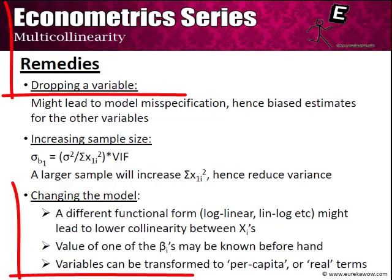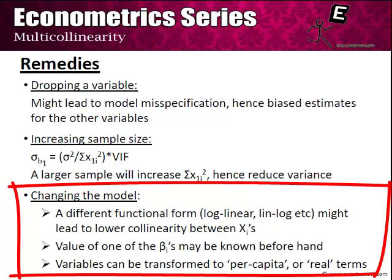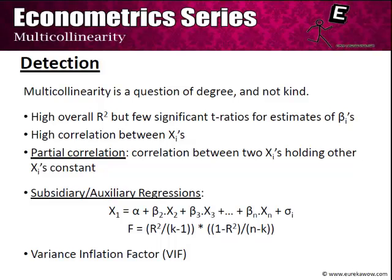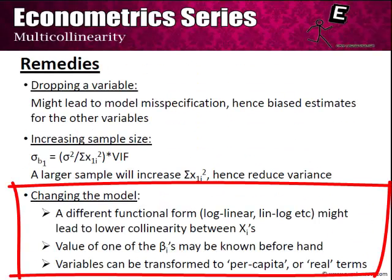The third remedy is to change the model. A different functional form such as log-linear or lin-log may lead to lower collinearity between regressors. Additionally, if the value of one coefficient — say β2 — is known beforehand, it can be substituted directly, transforming the regression to (yi − β2·x2) regressed on x1, eliminating multicollinearity since x2 is no longer an independent variable. Variables can also be transformed to per capita or real terms to remove spurious collinearity from price or population scaling.